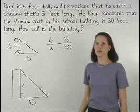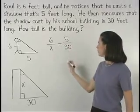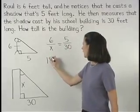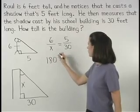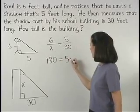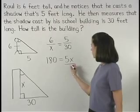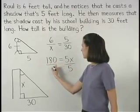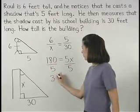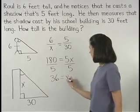Solving from here, we have 6 times 30 or 180 equals X times 5 or 5X. And dividing both sides by 5, 36 equals X.